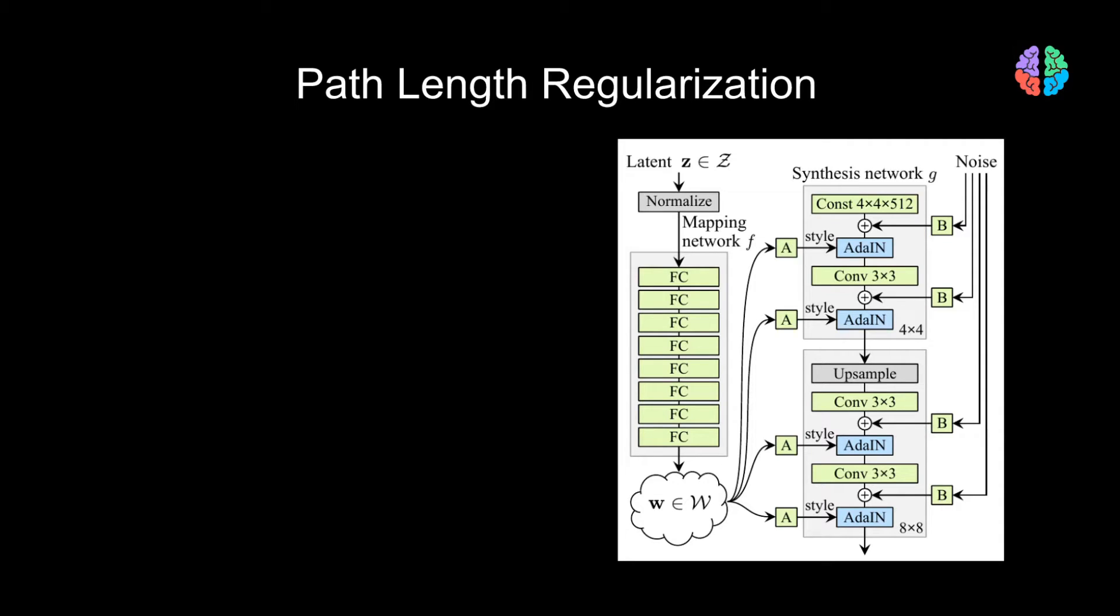Motivated by these observations, the paper proposes path length regularization as a solution to keep the PPL values low and to generate smooth images. Recollect that StyleGAN has a generator network G that takes as input the style vectors W.